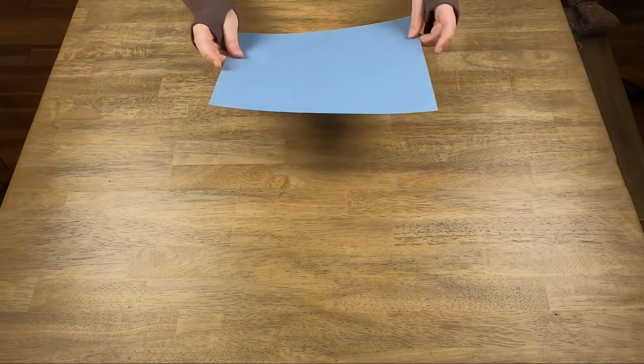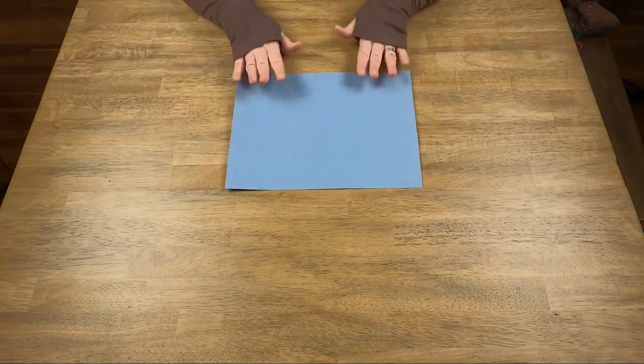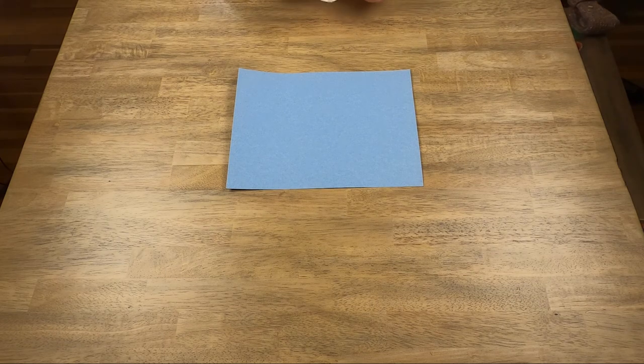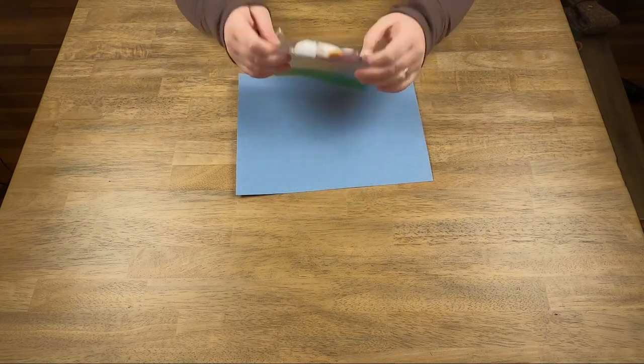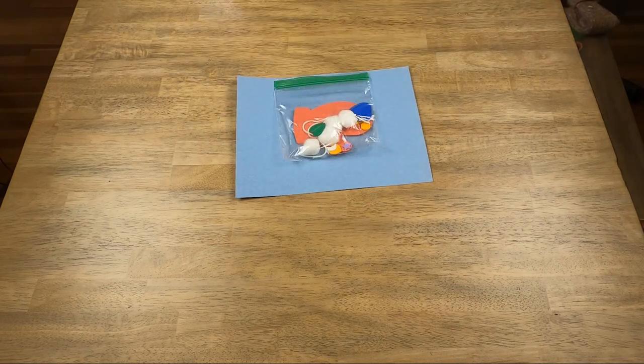Our first one is mittens. In your bag you'll have some construction paper. Take out the light blue one, it should look something like this. Then in your bag you'll also have a little ziplock with what looks like a red mitten in it with some other supplies we'll use.